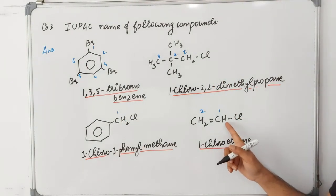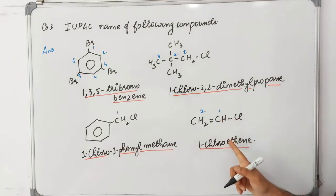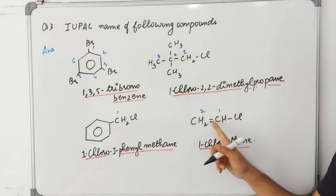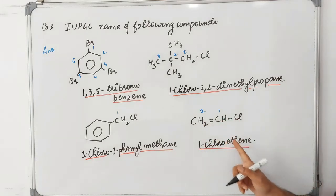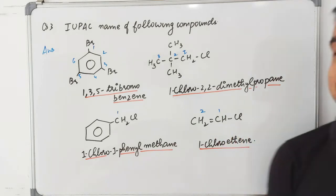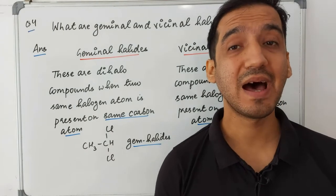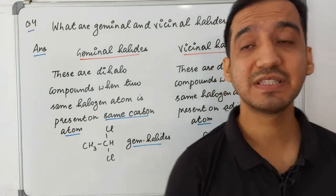For the next compound, you can give the numbering: there is 1-chloro, carbon 2, and a double bond — so the name is 1-chloroethene.